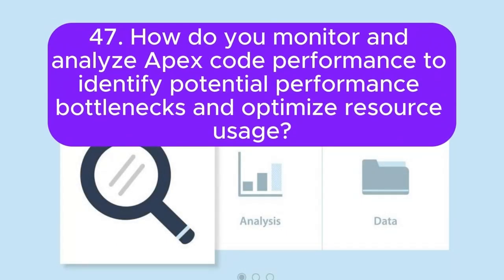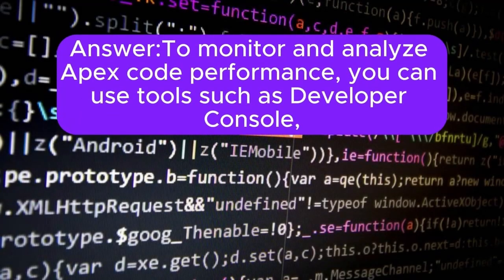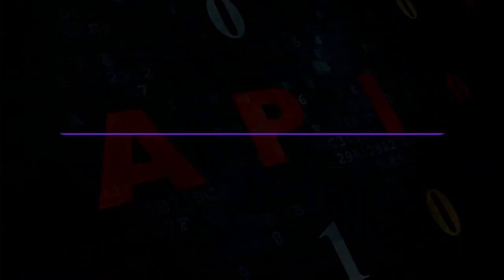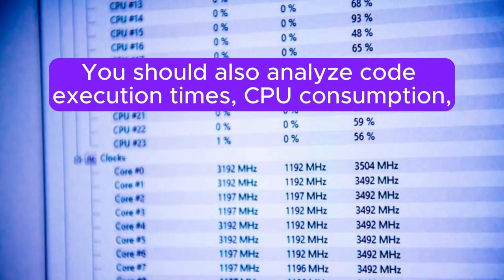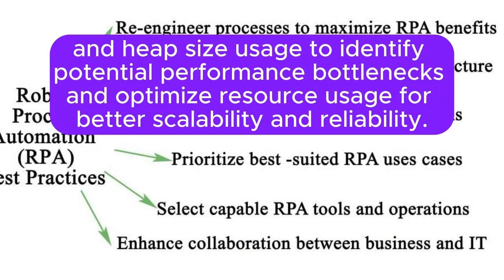Question 47: How do you monitor and analyze Apex code performance to identify potential performance bottlenecks and optimize resource usage? Answer: To monitor and analyze Apex code performance, you can use tools such as Developer Console, Apex Profiling, and Salesforce Optimizer to identify CPU-intensive operations, inefficient queries, and resource usage patterns. You should also analyze code execution times, CPU consumption, and heap size usage to identify potential performance bottlenecks for better scalability and reliability.